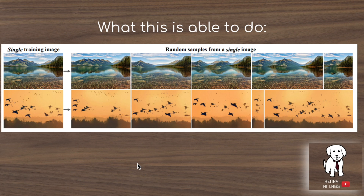We'll start describing the SYNGAN model by showing what it's able to do. Starting from images like this mountain image or this bird image, the SYNGAN is able to create new images that resemble the original image — sort of like a style transfer kind of algorithm, but it's not really style. It's more like generating a new image with the same kind of semantic structure.